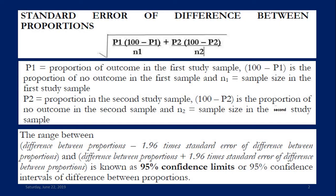P1 is the proportion of outcome in the first study sample. P2 is the proportion of outcome in the second study sample. N1 is the sample size in the first study sample. N2 is the sample size in the second study sample.